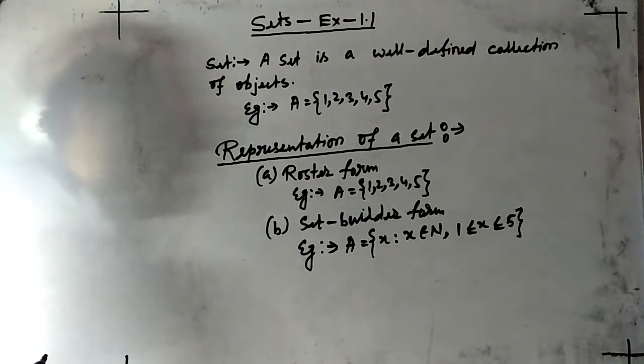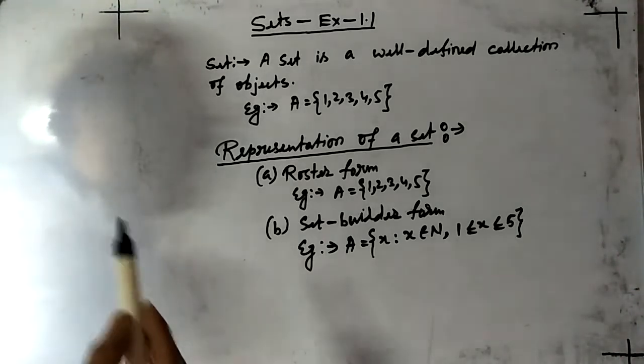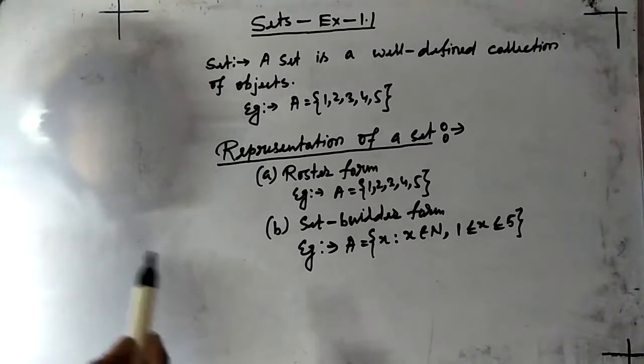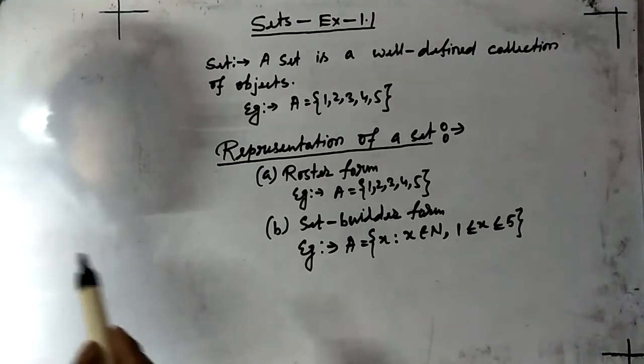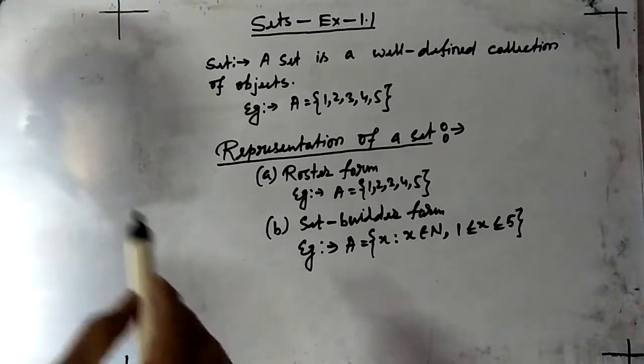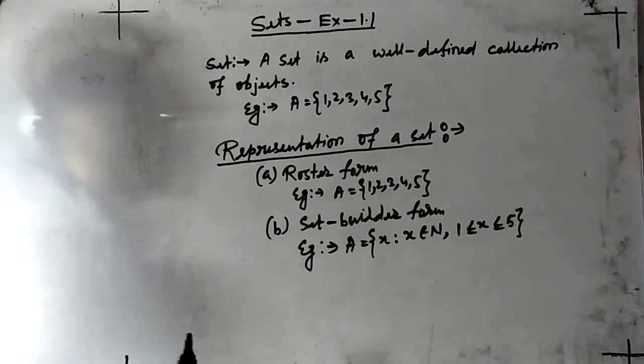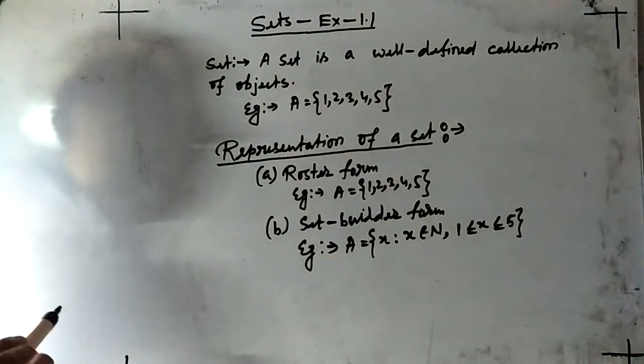If collection is not well-defined, it is not a set. For example, if I ask collect five most talented students of your class, then the answer will vary. Different students will give different answers according to them. So here collection is not well-defined, so collection of five most talented students of your class is not a set.